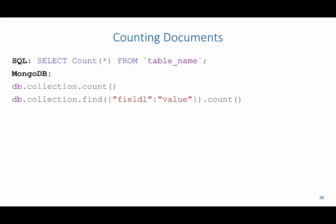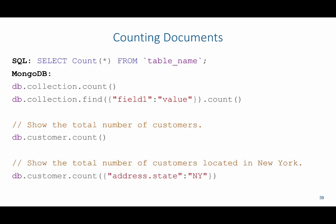We could have our filtering criteria inside of those parentheses, just like on the next example where we have db.collection.find with the filtering criteria and then .count. So we can either use count before or .count after. For example, to see the total number of customers in the customer collection we'd say db.customer.count. To see customers located in New York we'd say db.customer.count with address.state equal to New York.